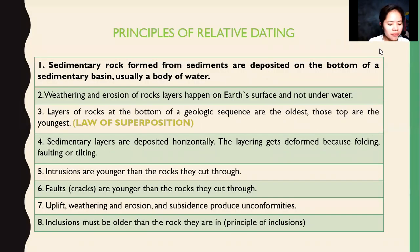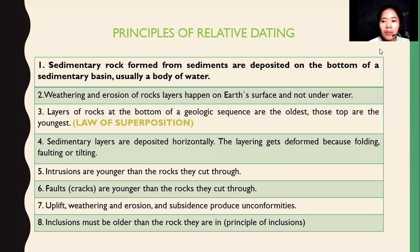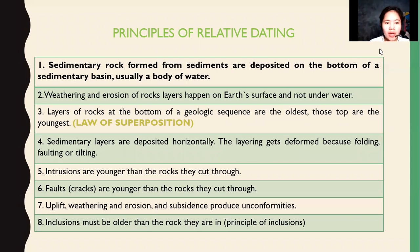Principles of relative dating: First, sedimentary rocks are formed from sediments deposited on the bottom of bodies of water — a sedimentary rock is essentially a compaction of sediments formed in basins or bodies of water. Second, weathering and erosion of rock layers happen on the earth's surface and not underwater. Weathering is the breakdown of rocks into smaller pieces, and erosion is the movement of those pieces from one place to another.